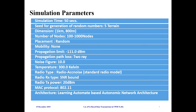The simulation parameters I considered were: time limited to 50 seconds, generation of random numbers set to 5 terrain, and dimension varying between 800 meters to 1 kilometer. The number of nodes was varied from 100 to 1000, placement was random, and for the particular dynamic environment mobility was kept as none, but nodes were allowed to move with enough mobility.